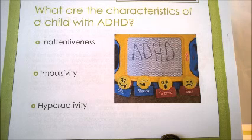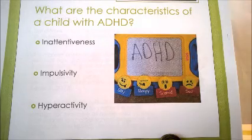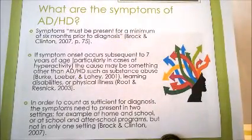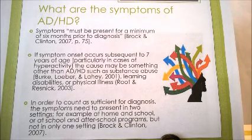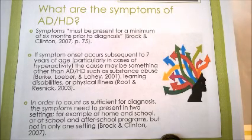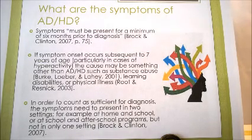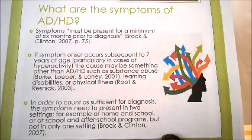Lack of attention and impulsivity are common characteristics among children with ADHD along with hyperactivity. Because children under age 5 tend to rate as inattentive and overactive by their parents, the Diagnostic and Statistical Manual of Mental Disorders recommends that symptoms must be present for a minimum of 6 months prior to diagnosis. If symptom onset occurs subsequent to 7 years of age, particularly in cases of hyperactivity, the cause may be something other than ADHD, such as substance abuse, learning disabilities, or physical illness.